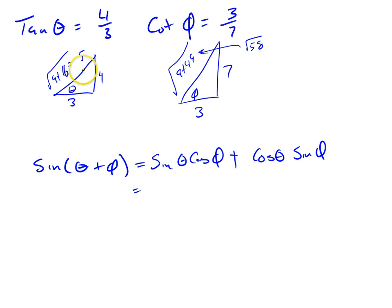Sine of theta would be opposite over hypotenuse. Cosine of phi would be adjacent over hypotenuse. And the cosine of theta would be 3 over 5. And the sine of phi would be, sine of phi, where am I, there, over there, so 7 over the square root of 58.